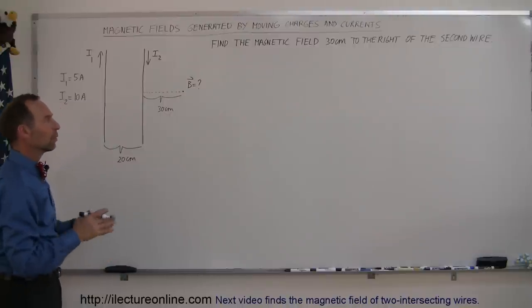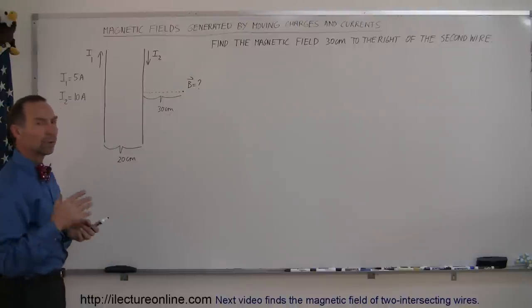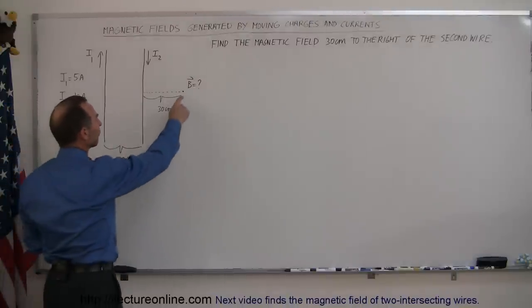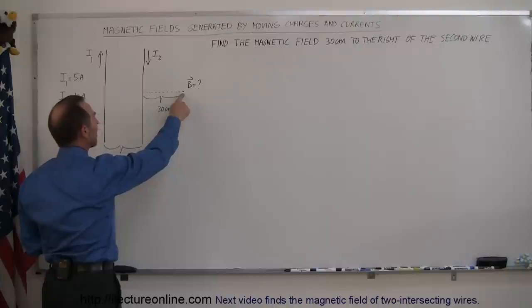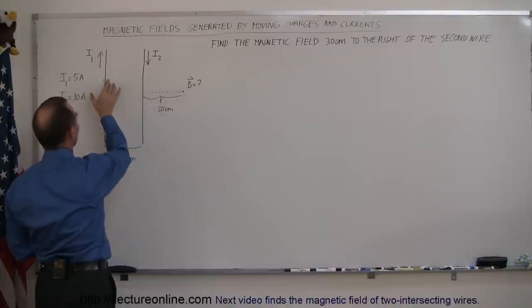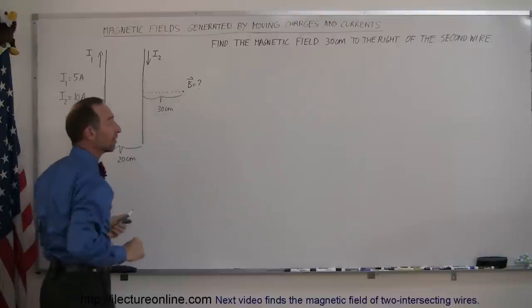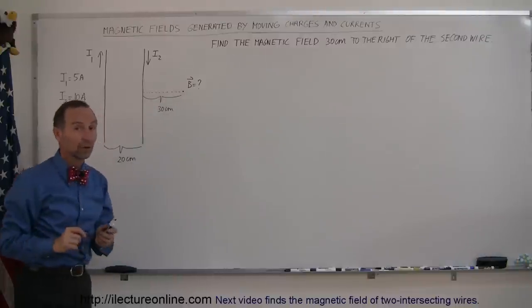So how do you go about doing that? The magnetic field here is going to be a vector sum of the magnetic field caused by the first wire and the magnetic field caused by the second wire.